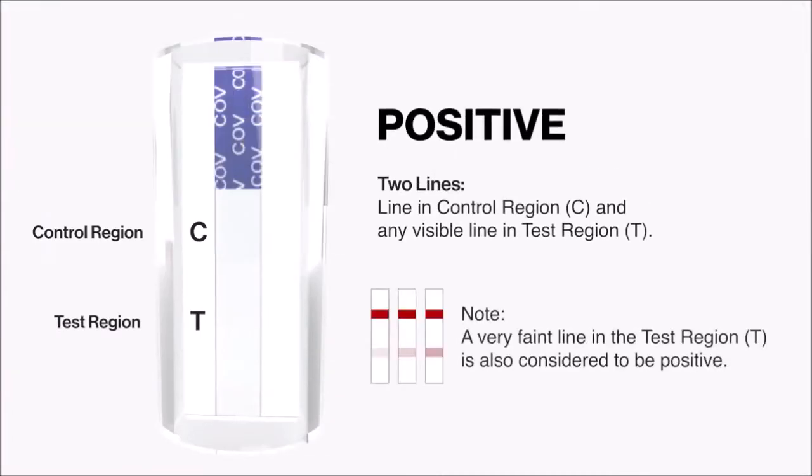A positive result shows two lines: line in control region C and any visible line in test region T. Note: A very faint line in the test region T is also considered to be positive.